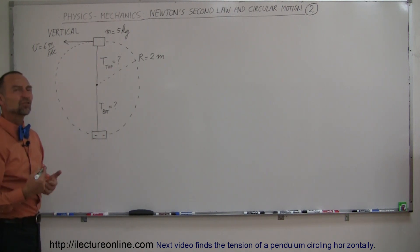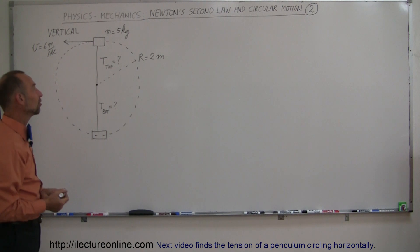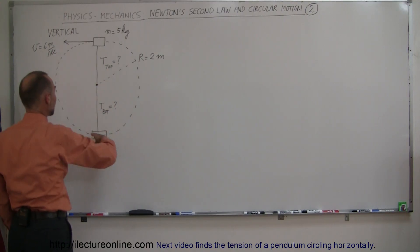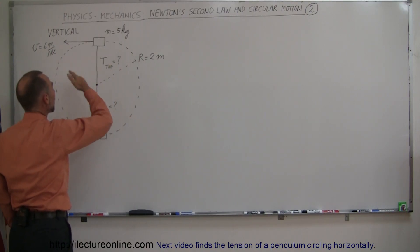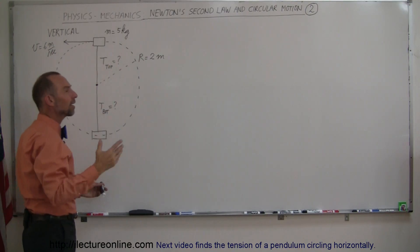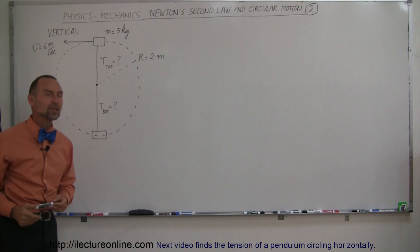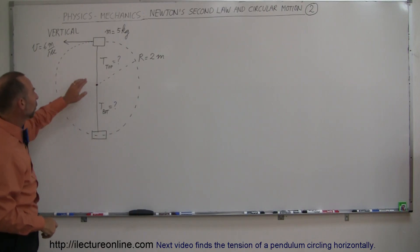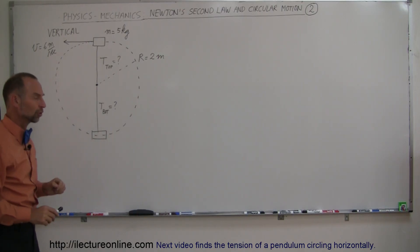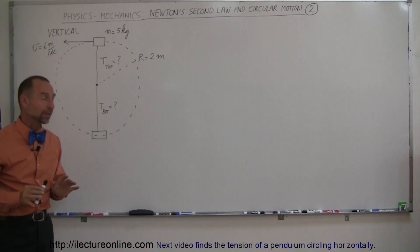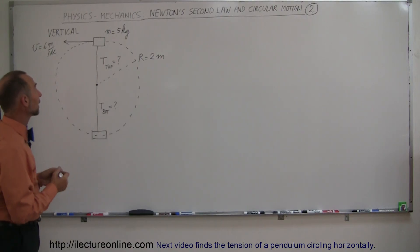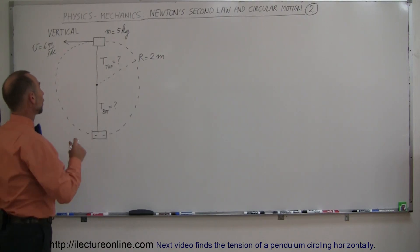That's a somewhat unusual setup, because normally the object would go faster at the bottom and slower at the top. But if we keep it going at a constant speed of 6 meters per second, what would be the tension at the top and at the bottom? There are two ways of approaching that.